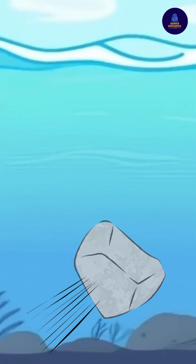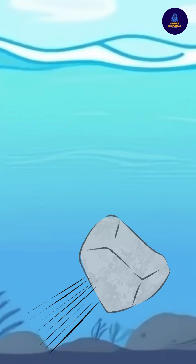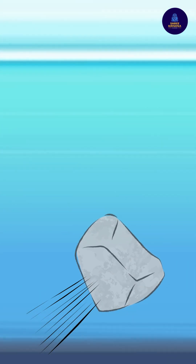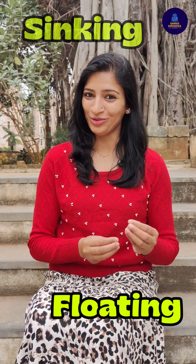Let's understand this with a simple example. A stone, which has a higher density than water, sinks. On the other hand, a wooden block and oil, having lesser density than water, they float. These are the golden rules for sinking and floating.